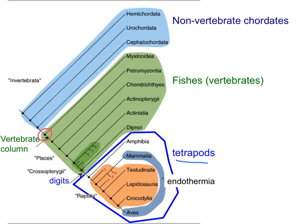Now let's focus on tetrapods and look at different traits. Is the presence of a vertebral column something unique to tetrapods — amphibians, mammals, reptiles, and birds? Although they all inherited the vertebral column from their common ancestor, that ancestor was not the first one to have a vertebral column. Other fish also have vertebral columns. So having a vertebral column is not unique to tetrapods — that makes it a symplesiomorphy.